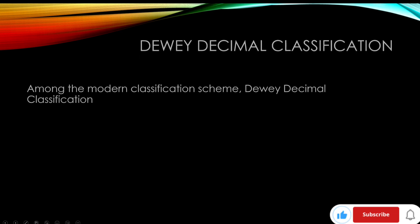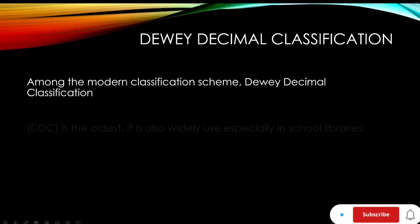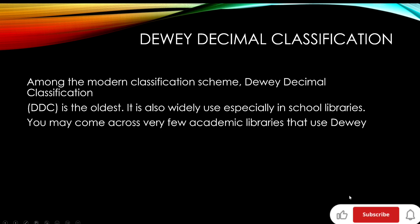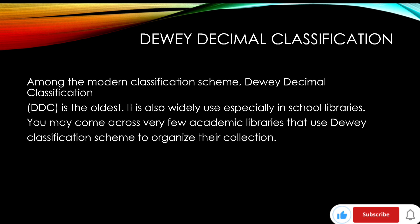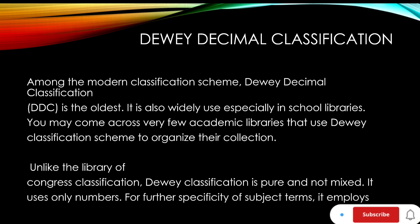The next scheme is the Dewey Decimal Classification (DDC). Among modern classification schemes, DDC is the oldest. It is also widely used, especially in school libraries. Unlike the Library of Congress Classification, Dewey Classification is pure and not mixed — it uses only numbers for specificity, and it employs decimals.